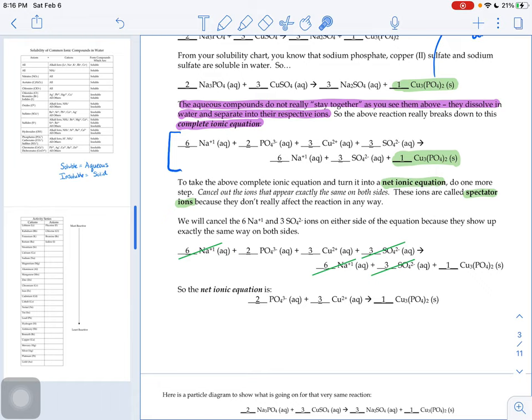Our copper starts as 3 Cu+2 aqueous. So a standalone ion in the aqueous form. At the end of the reaction, it's not a standalone ion in aqueous form. It became part of a solid, part of a compound. So something's happening with our phosphate and copper ions.